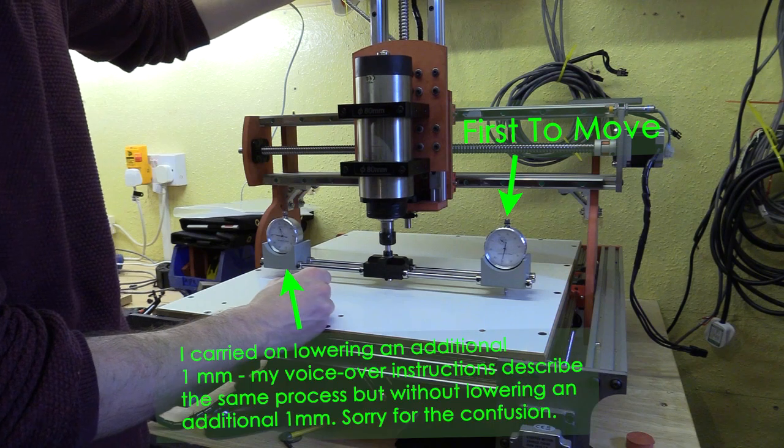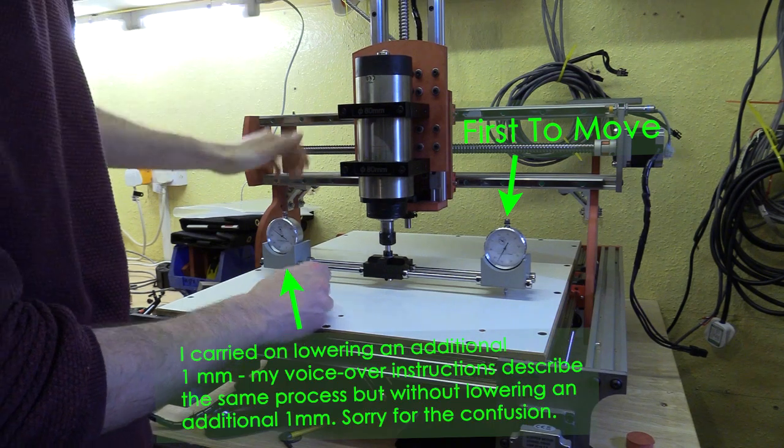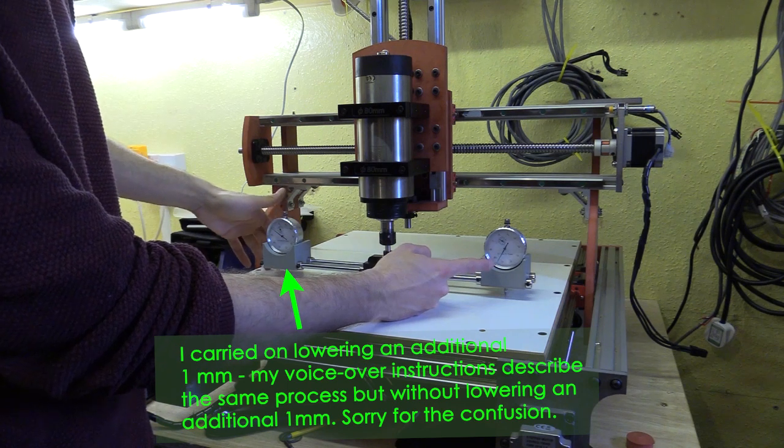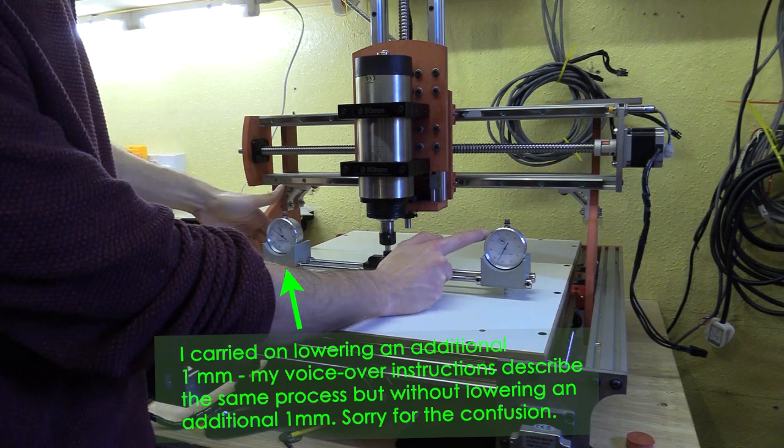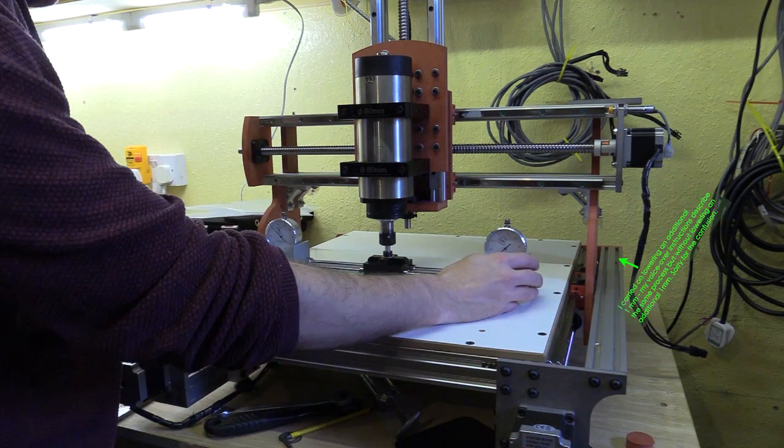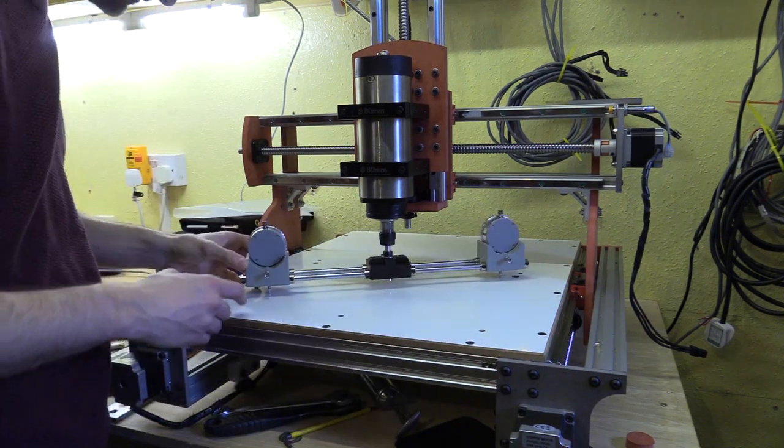Now with the jig positioned along the x axis, lower the z axis until the first probe touches. Make a note of which side that is. Carry on lowering until the second makes contact. Here you want the dial needle to just move before you stop travelling downwards.